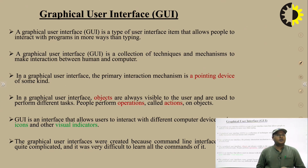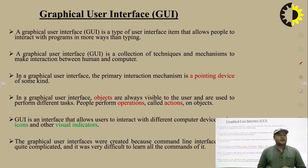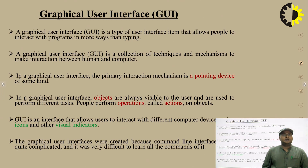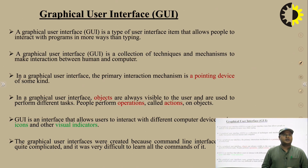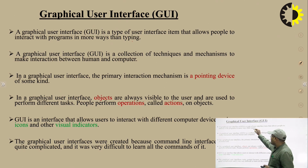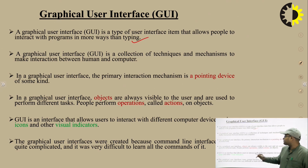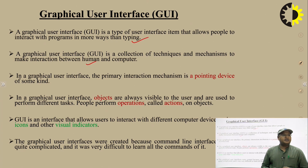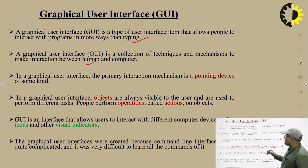The most important user interface is the graphical user interface, called GUI. A graphical user interface is a type of user interface that allows people to interact with programs in more ways than just typing — since typing and entering data takes very long time. A GUI is a collection of techniques and mechanisms that make interaction between the human and computer possible.